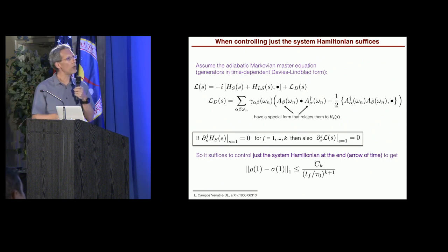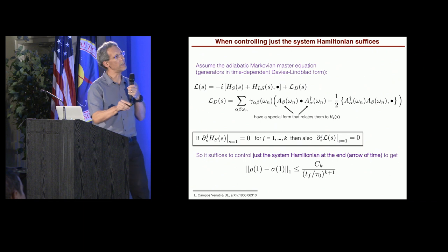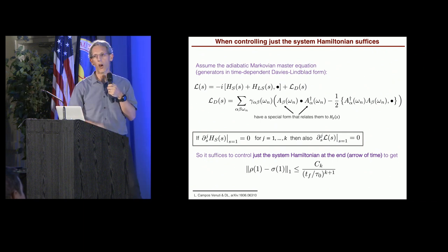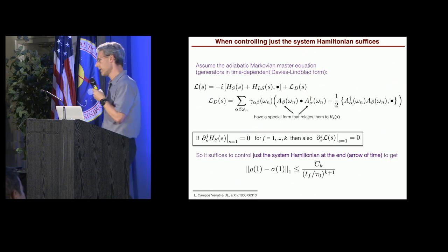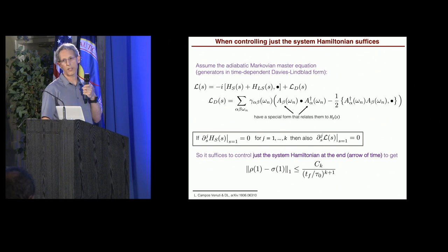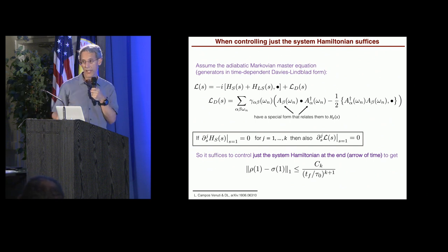And the point is that the Lindblad operators, they actually have a special form that relates them to the system Hamiltonian. So because of that, it turns out it suffices to just ask that the system Hamiltonian derivatives at the end boundary vanish. And as soon as this is satisfied, then automatically the Liouvillian derivatives also vanish at the boundary. Okay? So we only need to control the system Hamiltonian at the end, this is the arrow of time, to get this error to be arbitrarily small.